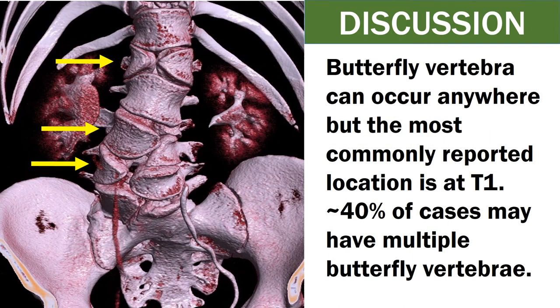Butterfly vertebra can occur anywhere, but the most commonly reported location is at T1. Around 40% of cases may have multiple butterfly vertebrae.